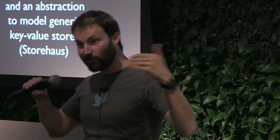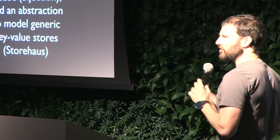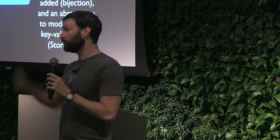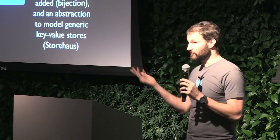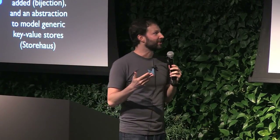An injection is almost the same as a bijection except you can always go from A to B, but B back to A might fail — and that's serialization. You can always turn a tweet record into bytes, but if you give me some random bytes I can't always get back a tweet record. That's an injection. We developed that library, though ultimately we didn't force type-safe serialization on everybody because it turned out they hated it.